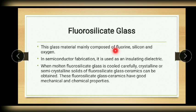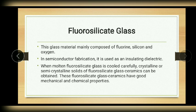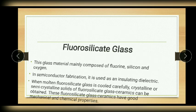The final one is fluorosilicate glass. This glass mainly comprises fluorine, silicon, and oxygen. Since this material has a small relative dielectric constant, it is used between copper metal layers during silicon chip fabrication processes. When molten fluorosilicate glass is cooled carefully, crystalline or semi-crystalline solids of fluorosilicate glass ceramics can be obtained. These have good mechanical and chemical properties.